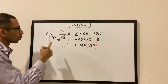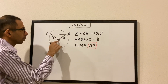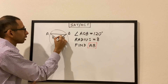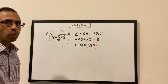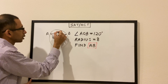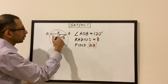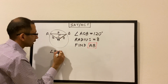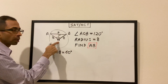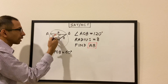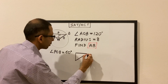The radius is 8, so OB is 8 and OA is also 8 — this becomes an isosceles triangle. In an isosceles triangle, if I drop a perpendicular from the vertex to the opposite side, it will bisect the angle into two equal halves. Let's call this point P. Angle AOB is 120 degrees, so angle POB equals 60 degrees.